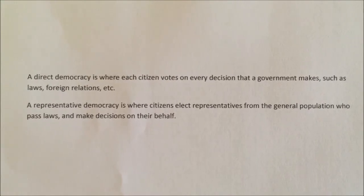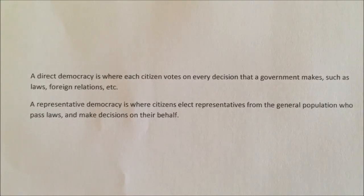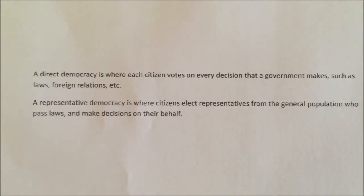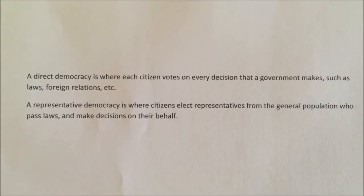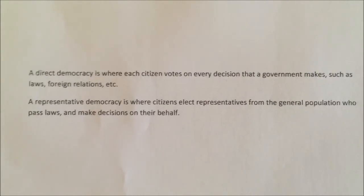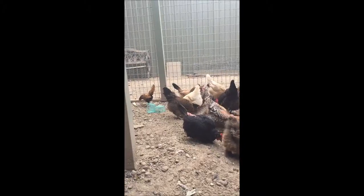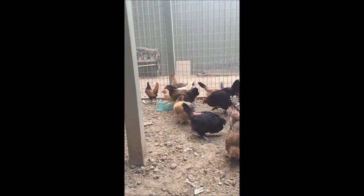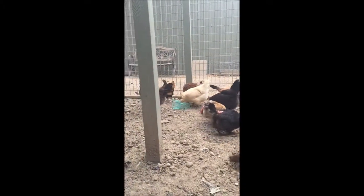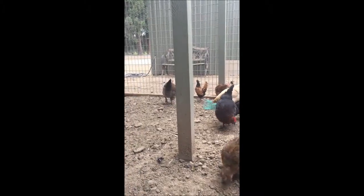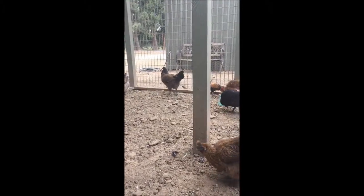A direct democracy is where each citizen votes on every decision that a government makes, such as laws, foreign relations, etc. A representative democracy, on the other hand, is where the citizens elect representatives from the general population who pass laws and make decisions on their behalf.